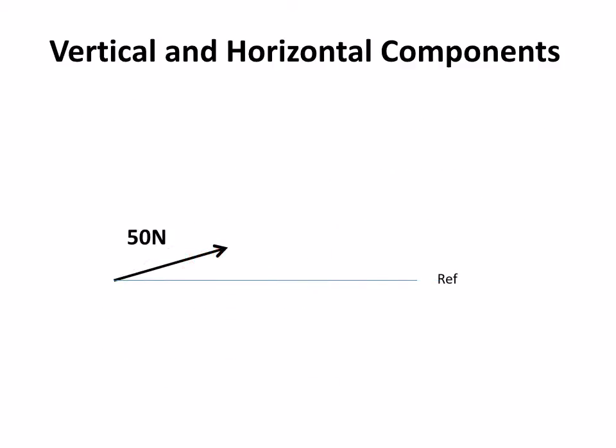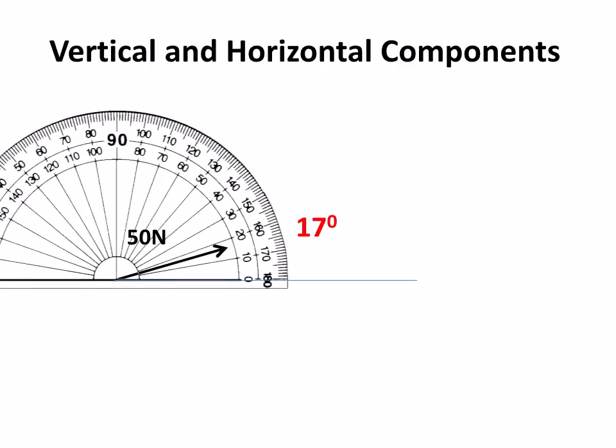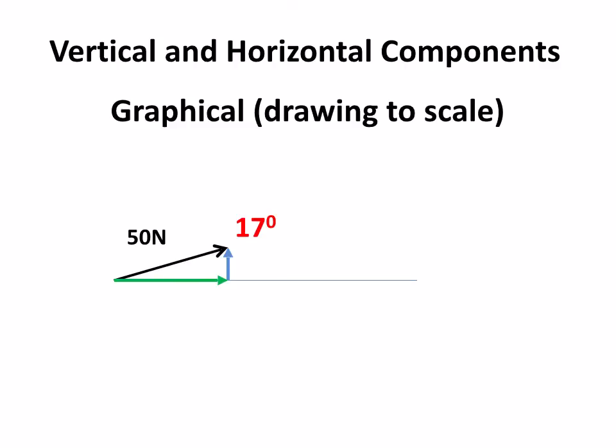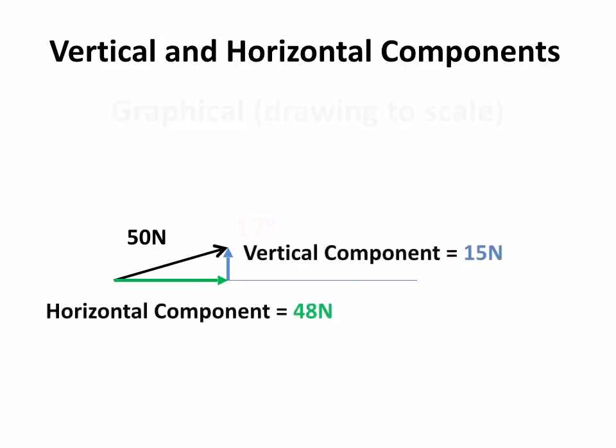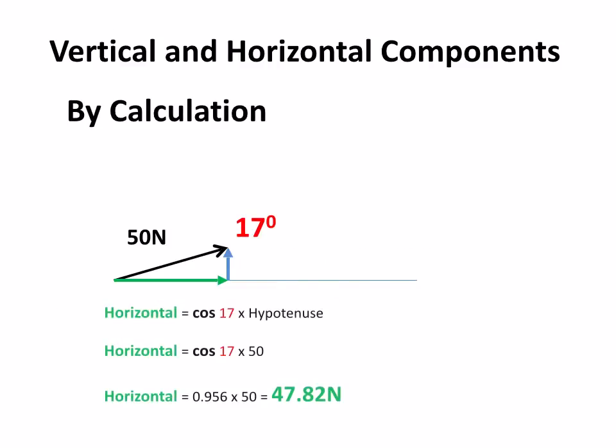Here's the second vector. We've got 50 newtons at an angle of about 17 degrees. Again, we can draw this to scale and find the vertical and the horizontal components. We've got 15 newtons and 48 newtons, and I can calculate those using sine and cosine.